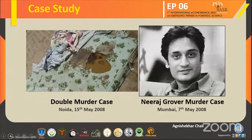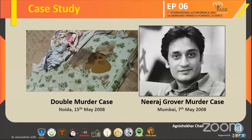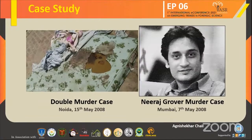In the initial investigation, Hemraj was suggested as the primary suspect, but on the next day his decomposed body was found on the terrace of the same apartment. The police were criticized for not securing the crime scene properly, and media theories emerged. The first CBI investigation named two assistants of Aarushi's parents as prime suspects, but also criticized the police and blamed media personnel for rushing into the crime scene, which potentially damaged, destroyed, and altered a lot of physical and biological evidences.